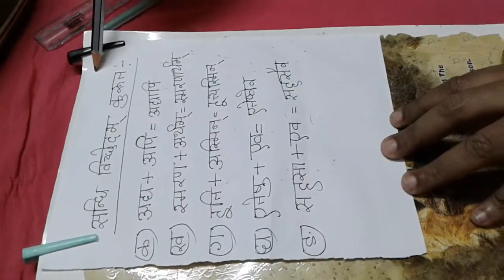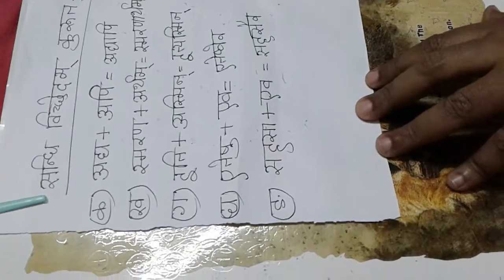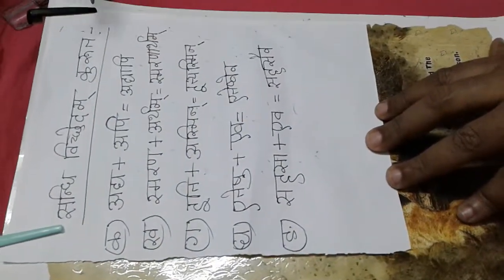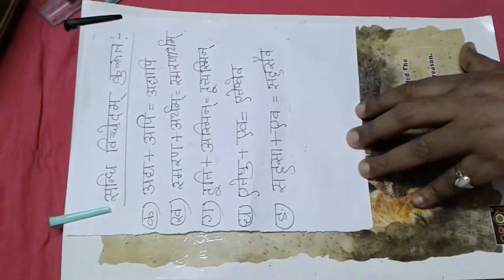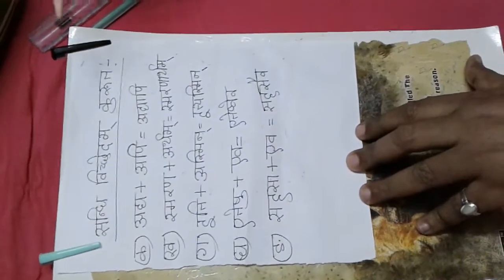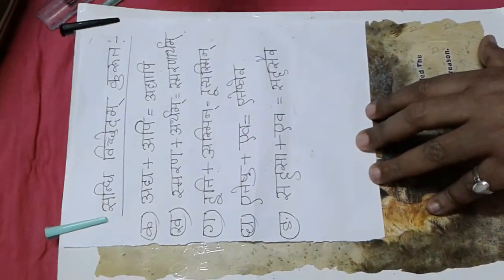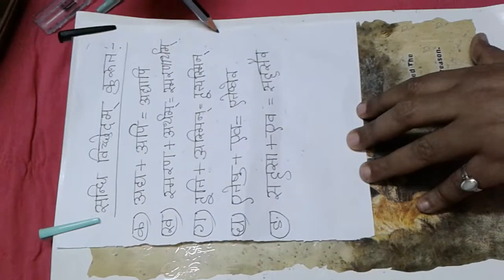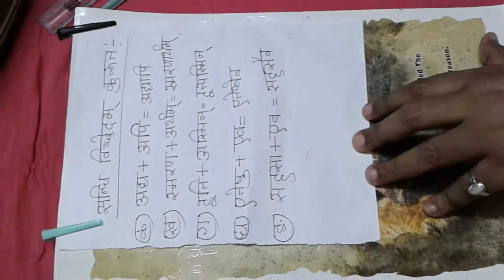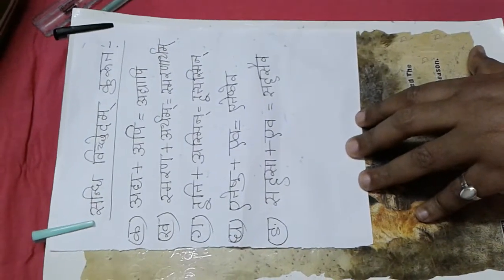You learn meanings — artham likhata, ek padena, poorna vakkena, prasna nirmanam, sandhi vichhedam. Practice sandhi vichhedam extra from your language book. When we do grammar, I will discuss more about sandhi. These are the exercises from the book — do it, learn it properly, watch the video properly, write it down in your Sanskrit copy. Om Namah Shivaya.